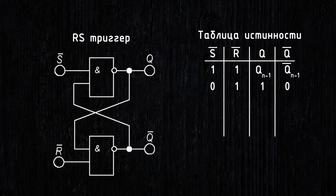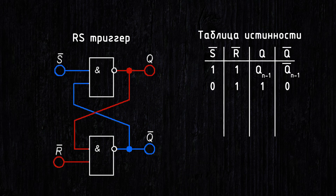Now we apply a 0 to the inverted S input and a 1 to the R input. This is the set mode. A 0 on the upper branch results in a 1 at the output of the NAND gate. At the bottom, two 1s give a 0, meaning a logical 1 is set at the Q output, which is why this is the set mode.